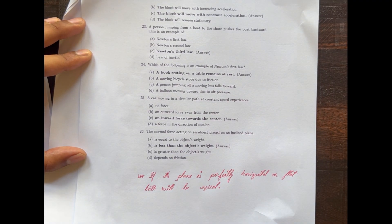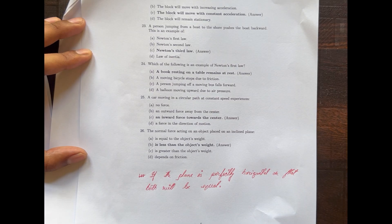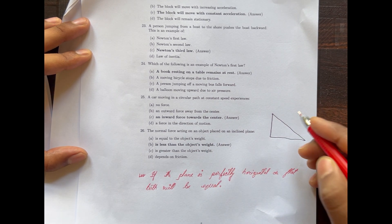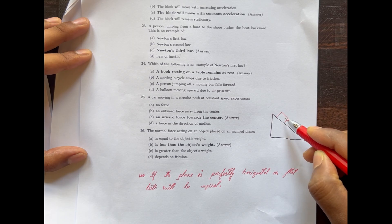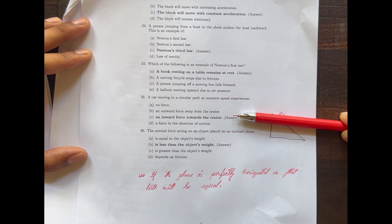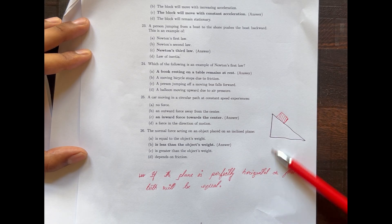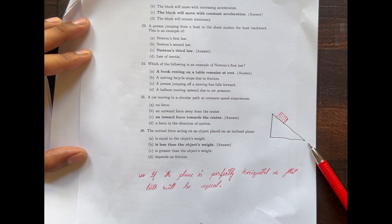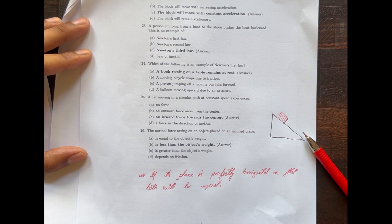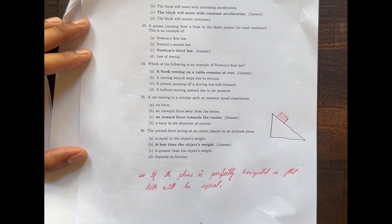The normal force acting on an object placed on an inclined plane: if the plane is perfectly horizontal or flat, the normal force is equal to the weight of the object. On an inclined plane, the normal force is less than the weight of the object.